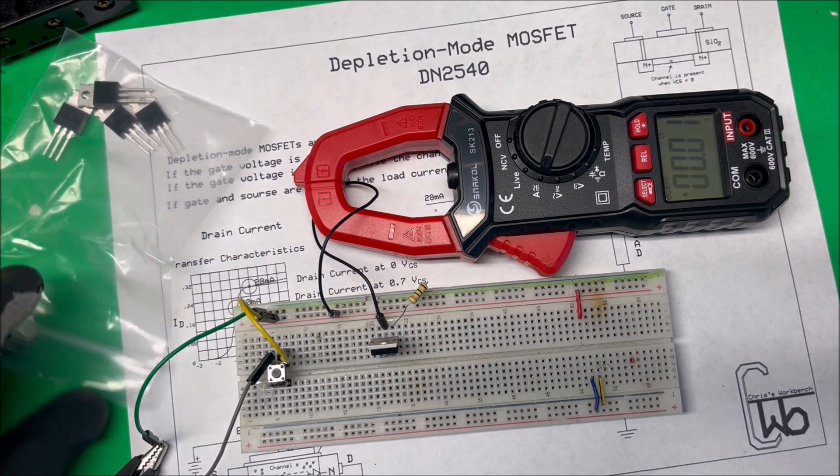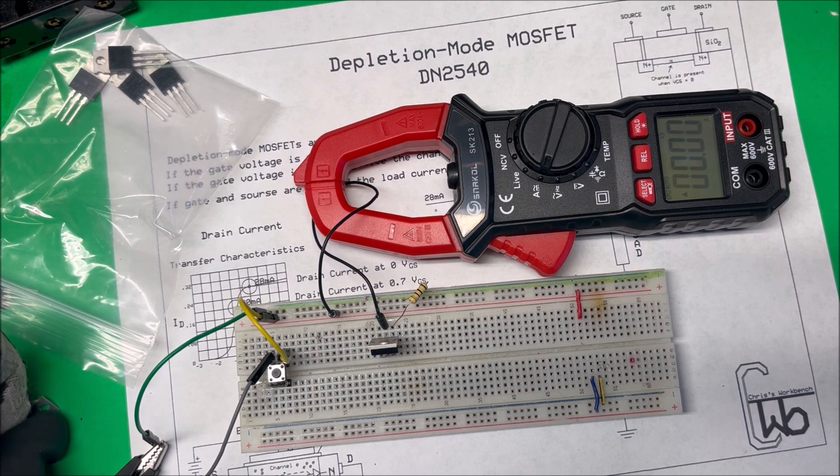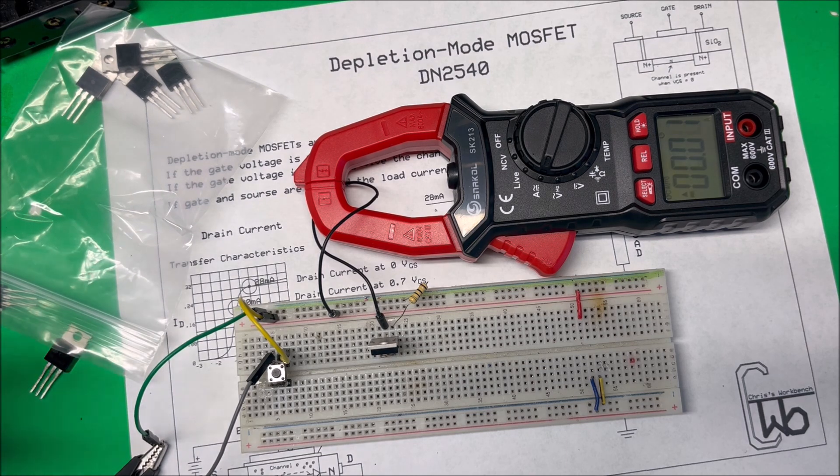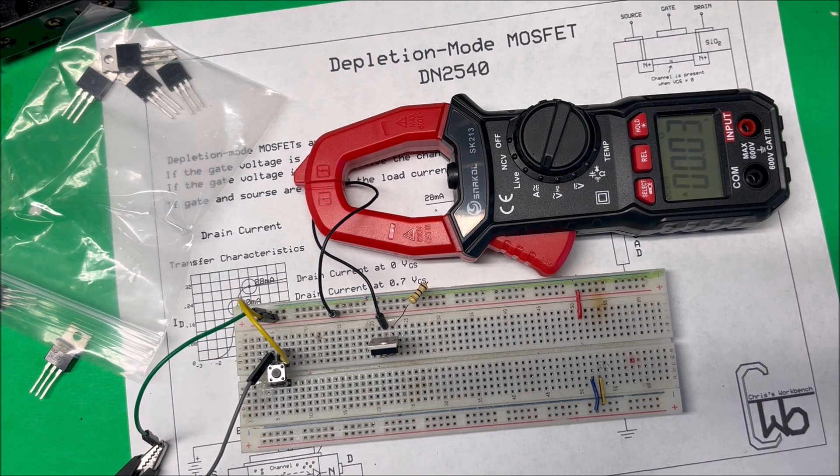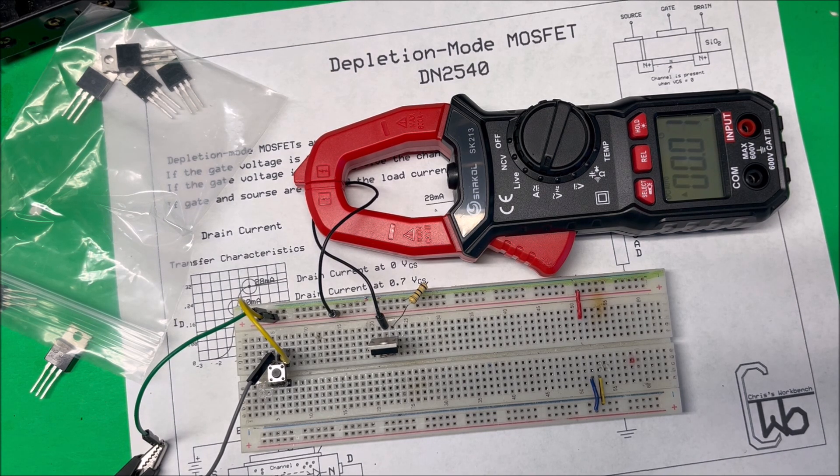Same with the SCRs. Those gate controlled SCRs are expensive, so they just give you a regular one and just change the label. So got to be careful with that stuff. Anyway, that's our depletion mode MOSFET.